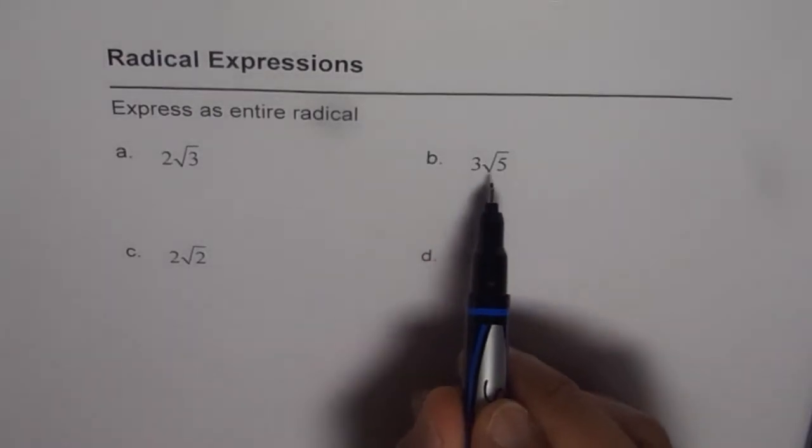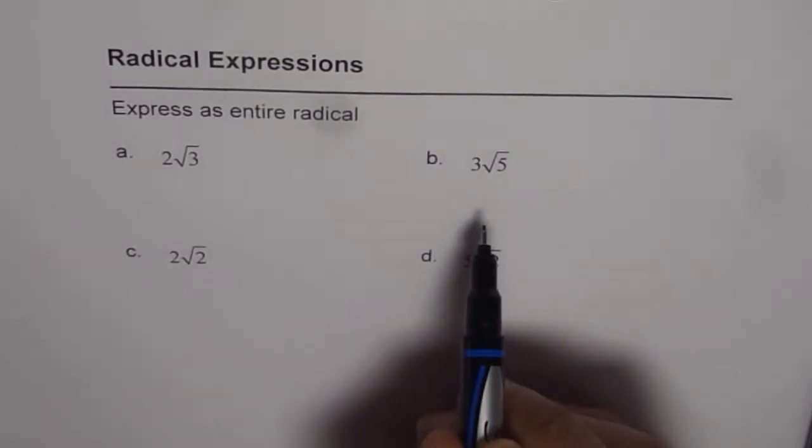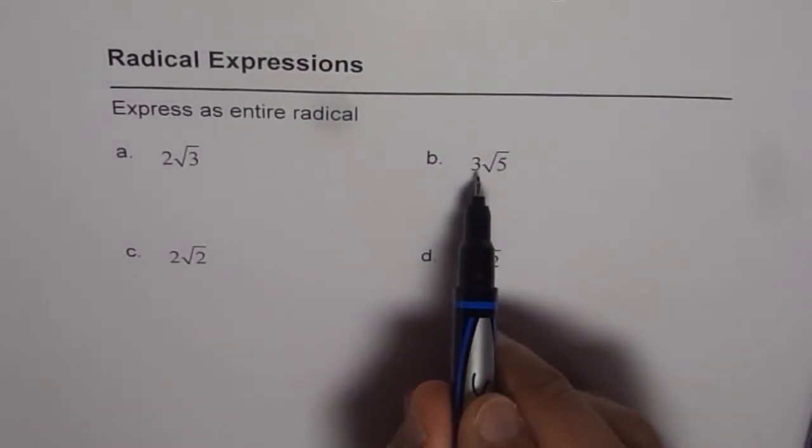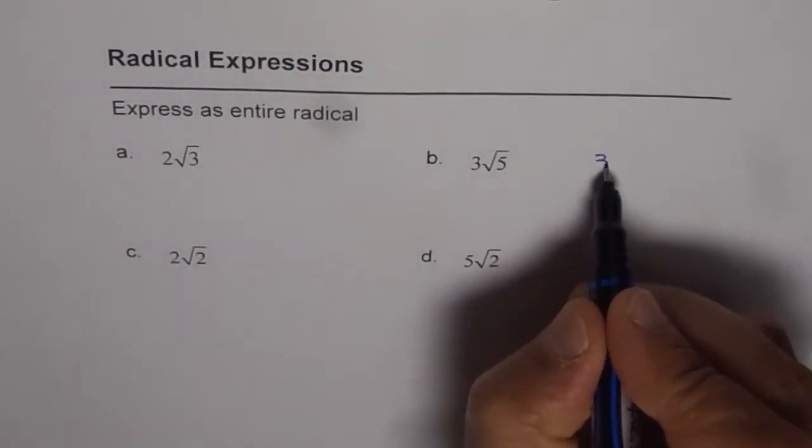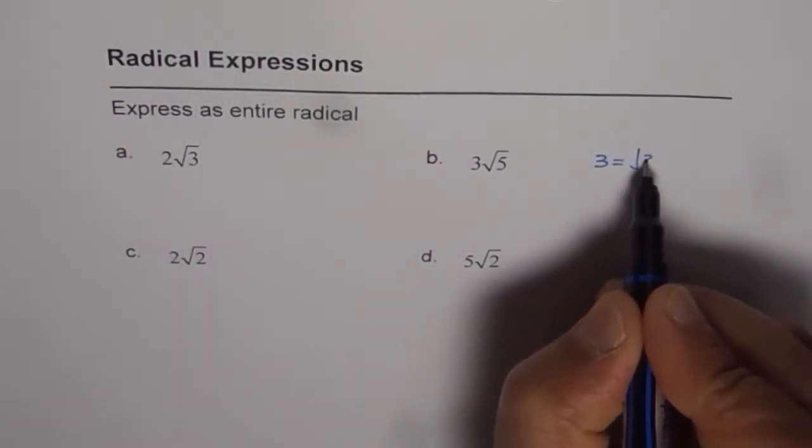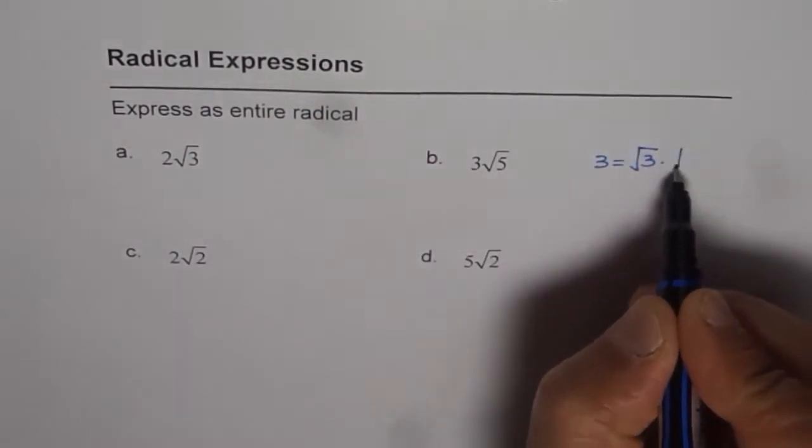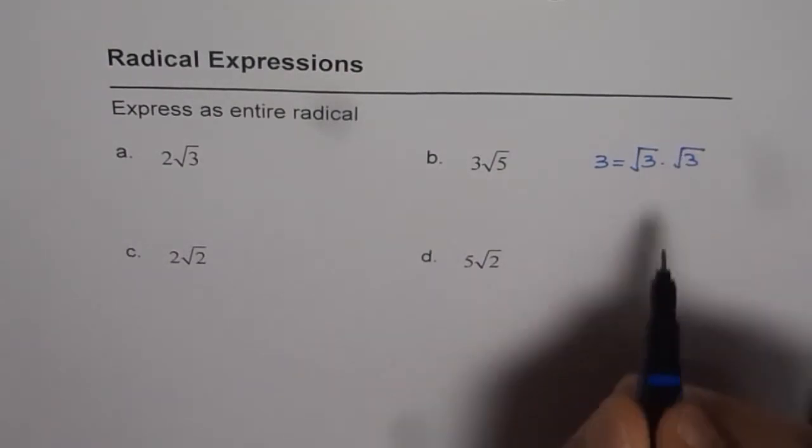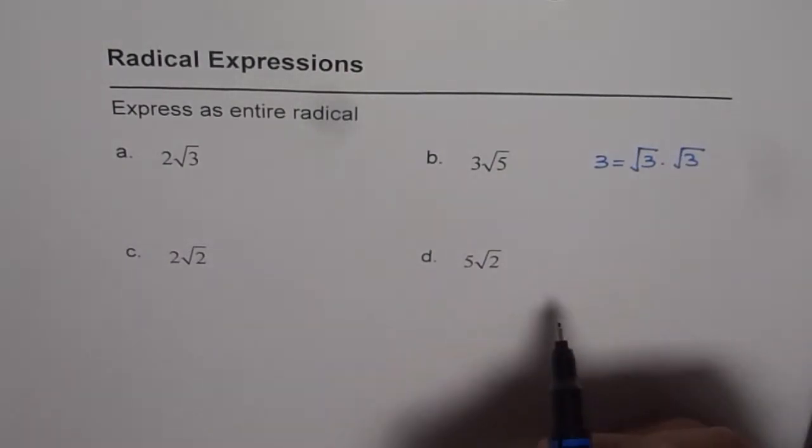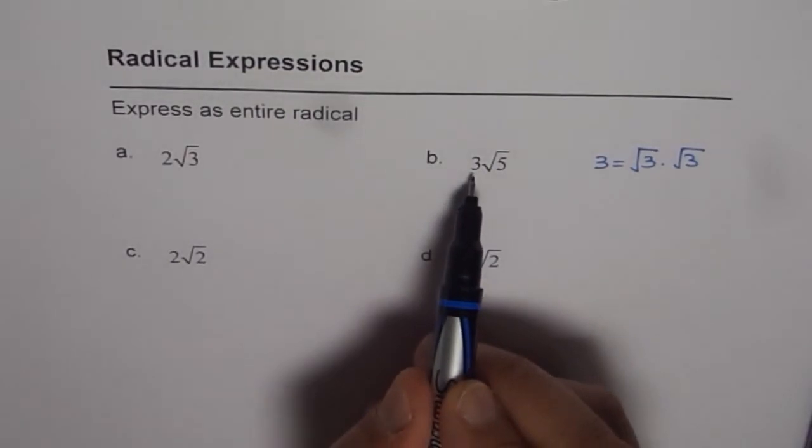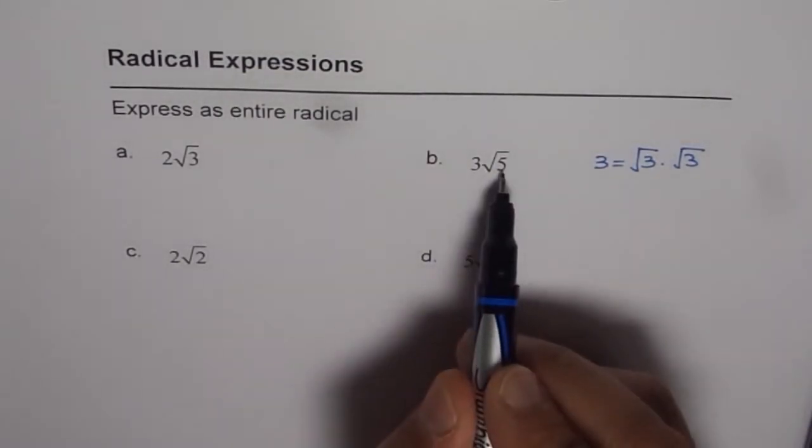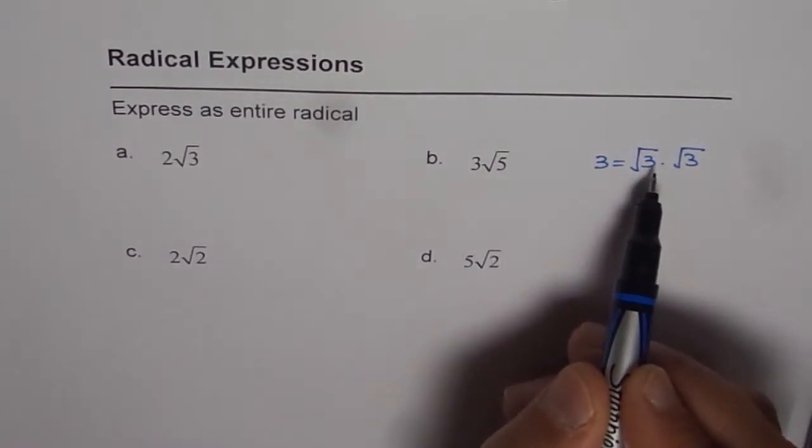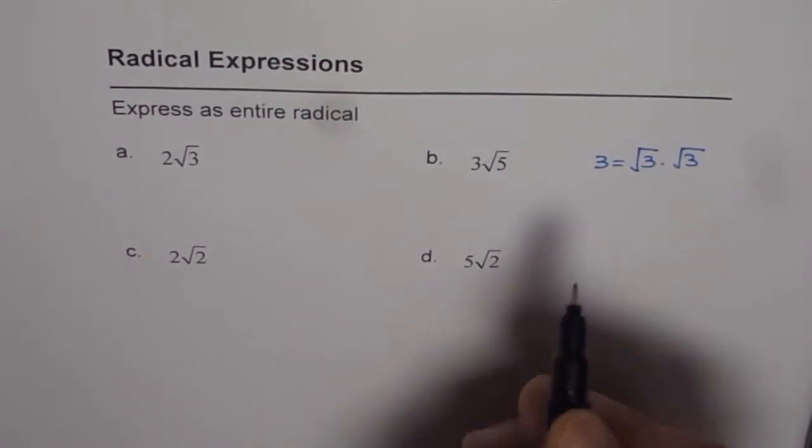Ok, so let me take 3 square root of 5. One radical means I want to take 3 inside the radical. As you know, 3 can be written as square root of 3 times square root of 3. That means, if I want to take 3 inside the radical sign, I should multiply this 5 by 9. Right? Square root of 3 times square root of 3.